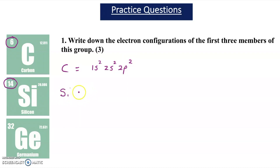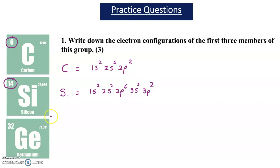Silicon is atomic number 14, so it has 14 protons and 14 electrons. Its electron arrangement is 1s², 2s², 2p⁶, 3s², 3p². Silicon is in period three because the outer shell is the third shell.